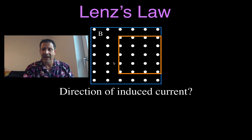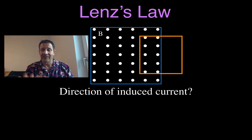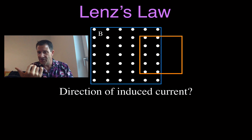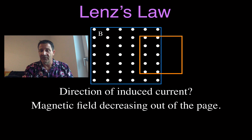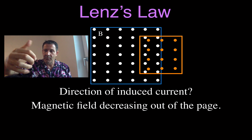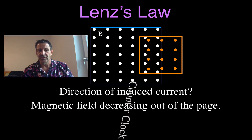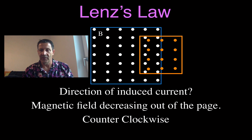Now we have Lenz's Law with the magnetic field pointing out of the page, and the coil moves out of the magnetic field. That means the magnetic field out of the page is decreasing through the coil. So my coil is going to want to produce more magnetic field out of the page. Reaching in with fingers pointing out — my thumb points in the counterclockwise direction. The coil produces a current flowing in the counterclockwise direction.